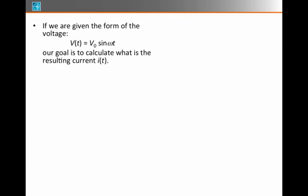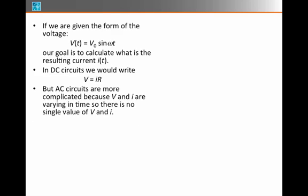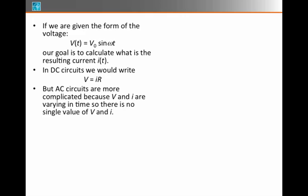So if we're given the voltage as a function of time, we would like to say that there's some relationship to the current. In a DC circuit, that would just be V equals IR. But in AC circuits, because V and I are complicated, they're changing in time, there's no such thing as a single value of V and I. We can't write that expression.